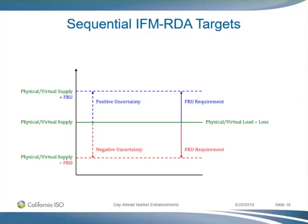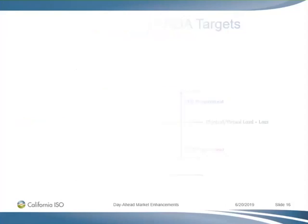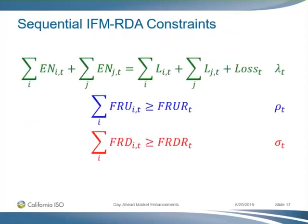We have three targets in the FMRDA: green, blue, and red as shown here. These are the three equations in option one: your power balance constraint, your flexible ramp-up requirement constraint, and your flexible ramp-down requirement constraint. These prices are used in settlement for energy, flexible ramp-up, and flexible ramp-down. Very simple.